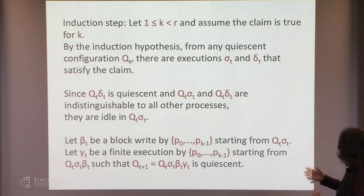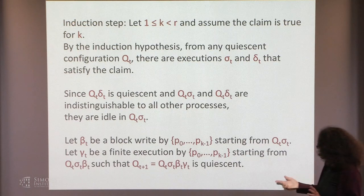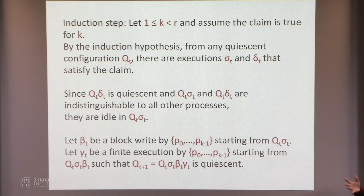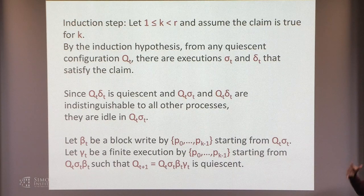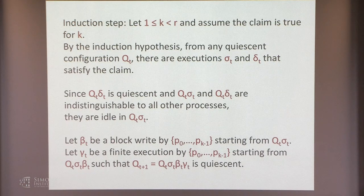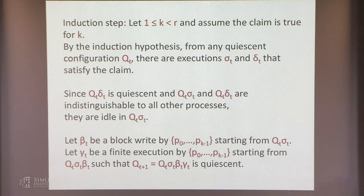After that block write, let gamma_t be a finite execution by those processes that results in a quiescent configuration. All other processes are idle, so by deadlock freedom, one of the first K processes will eventually get the resource. We let that process finish with its resource, do its exit protocol, and become idle. Then by deadlock freedom, any remaining non-idle processes will also eventually finish, resulting in a quiescent configuration Q_{t+1}.